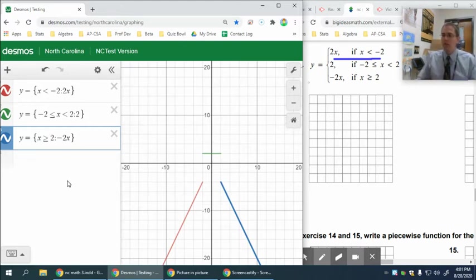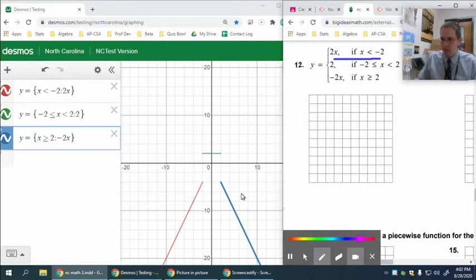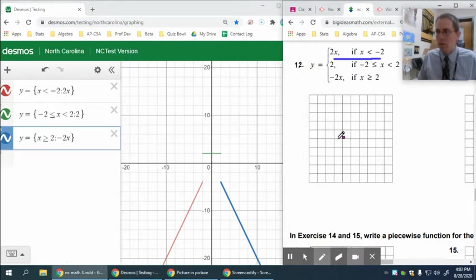But anyway, that gives you the same thing you have, and notice I could go ahead and draw it there. It is important to consider that if I were to do it, that this first piece has an open circle there. Let's see if I can draw that. I don't think it's going to let me. No, it's not, unfortunately.